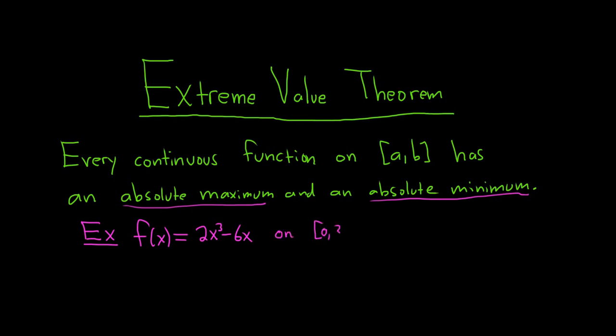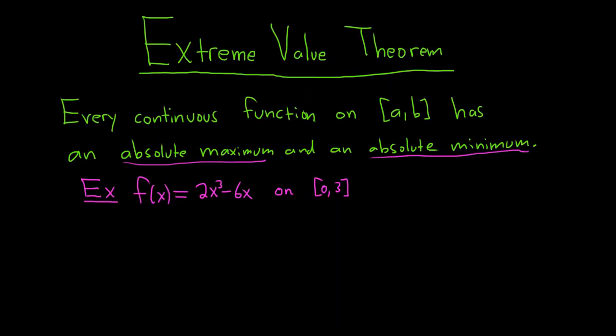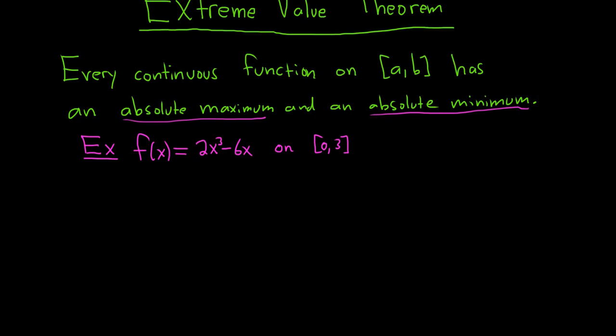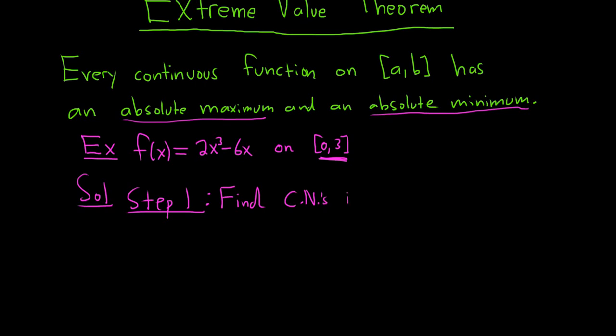The way to do this: recall that if a function has a maximum or minimum, then it has a critical number. So critical numbers could be maxes and mins. The other place where you could have a max or min is at the endpoints. In these problems, all you do is first find the critical numbers that are between 0 and 3. Step one: find the critical numbers in [0, 3], because critical numbers could lead to maxes and mins.